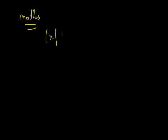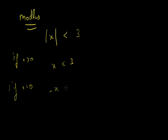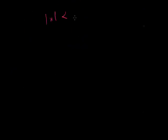The third topic is modulus inequations. For example, mod x is less than 3. If x is greater than 0, it opens as x is less than 3. If x is less than 0, it opens as minus x is less than 3, giving x is greater than minus 3. These two cases together give x is between minus 3 and 3. In general, mod x less than 3 opens as minus 3 is less than x is less than 3.